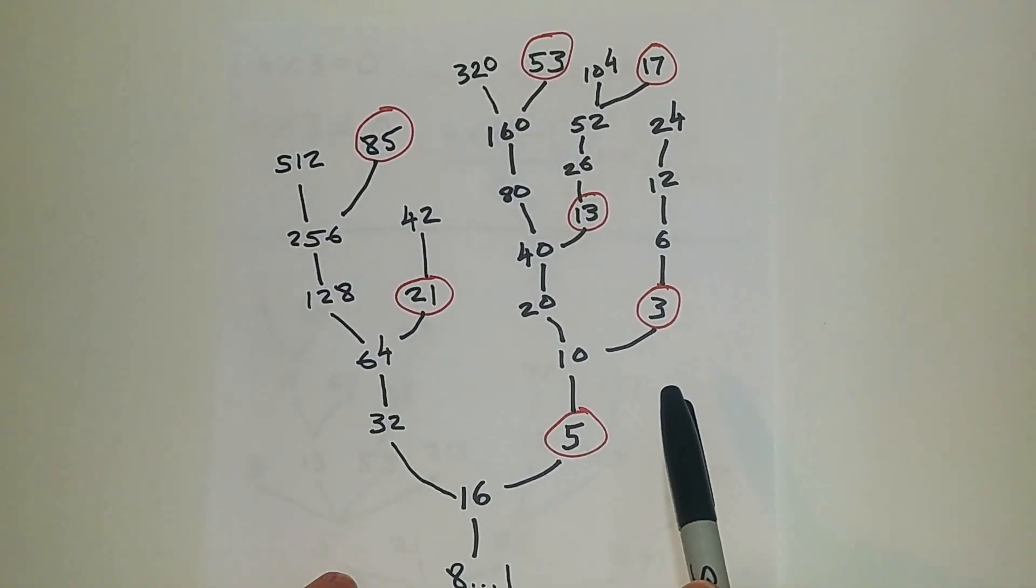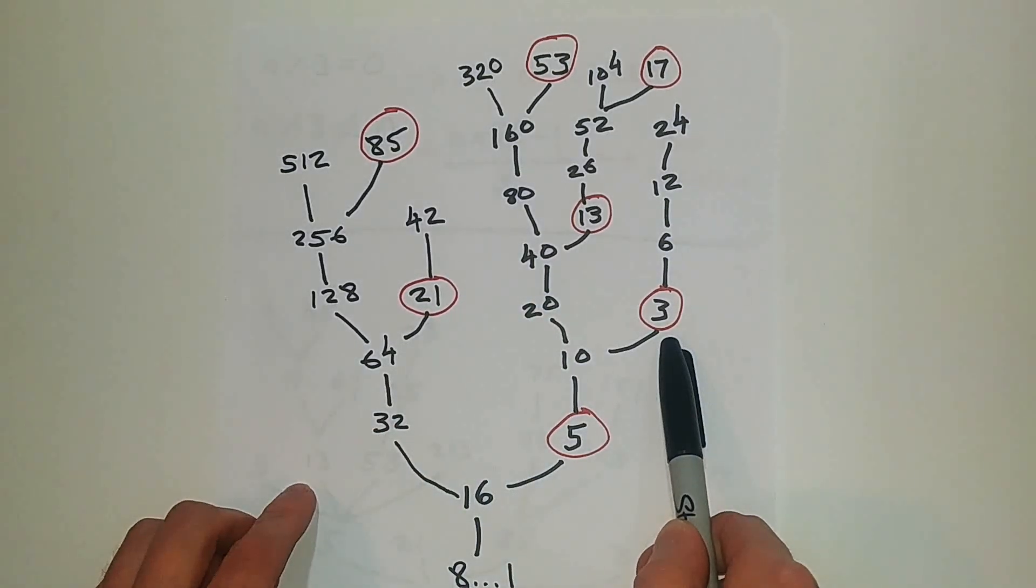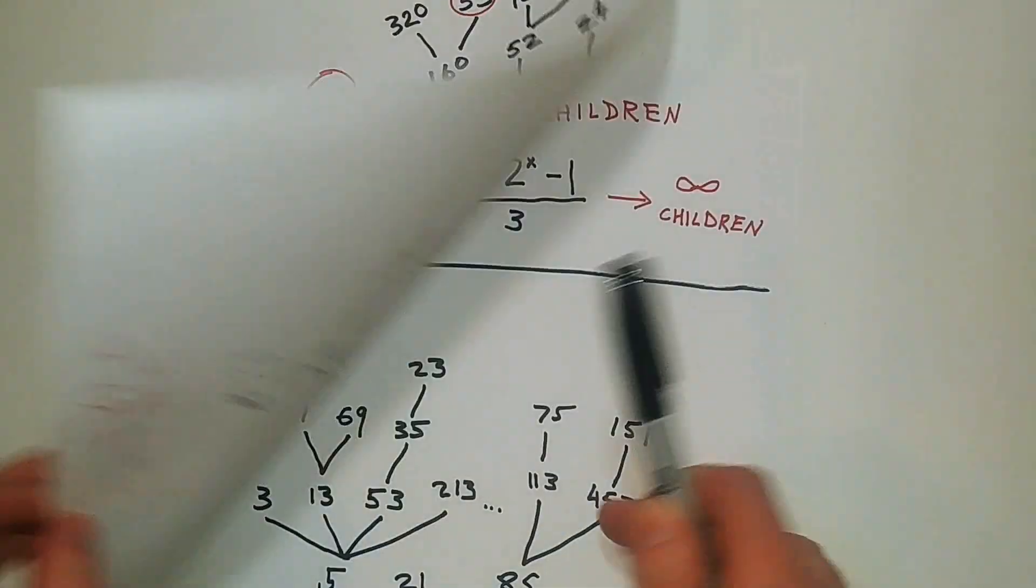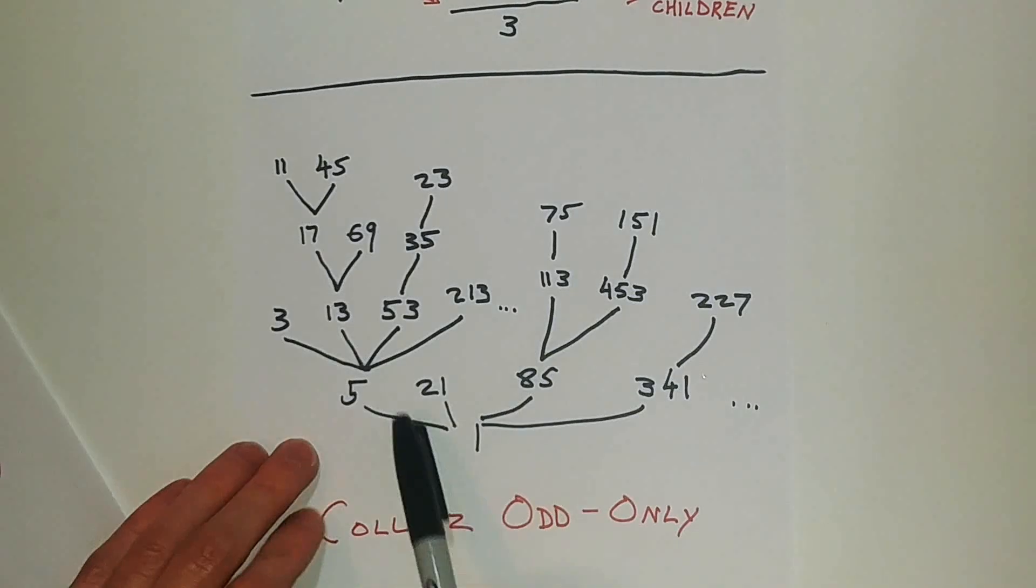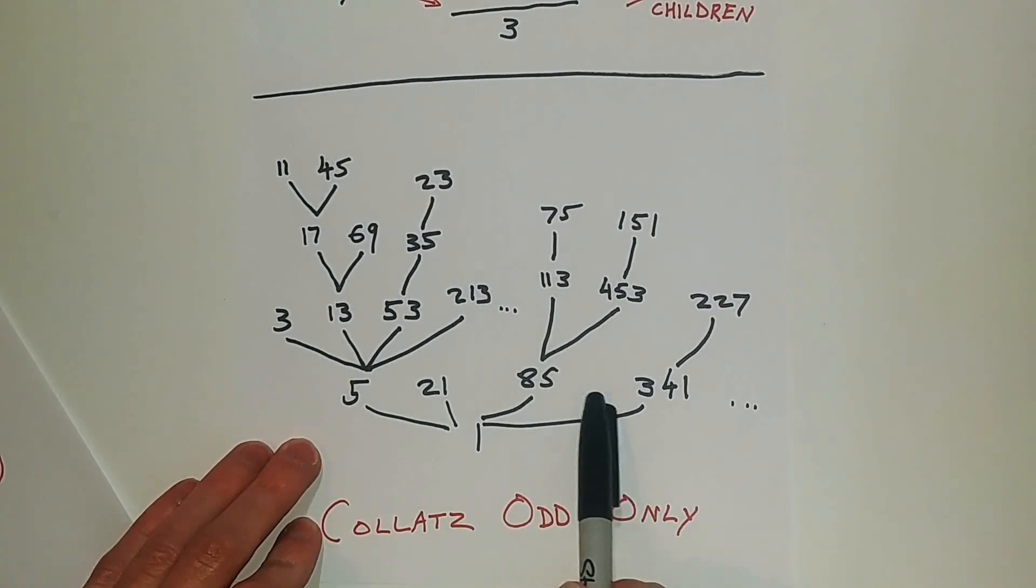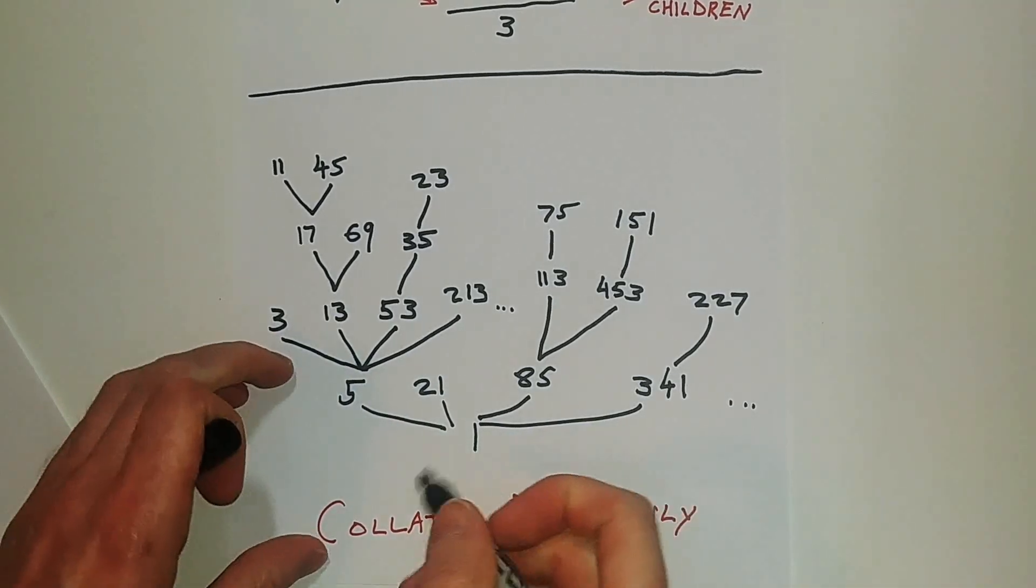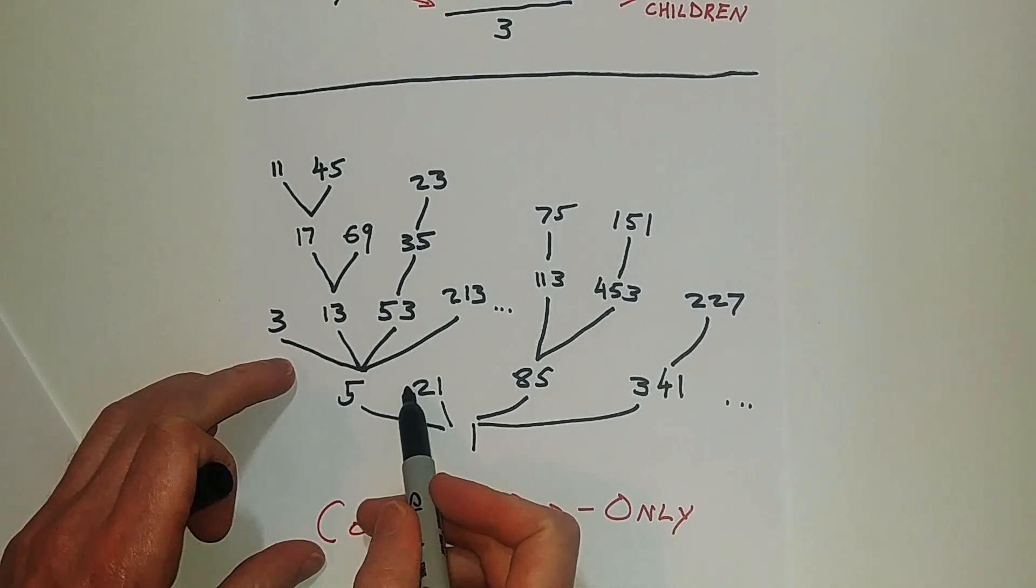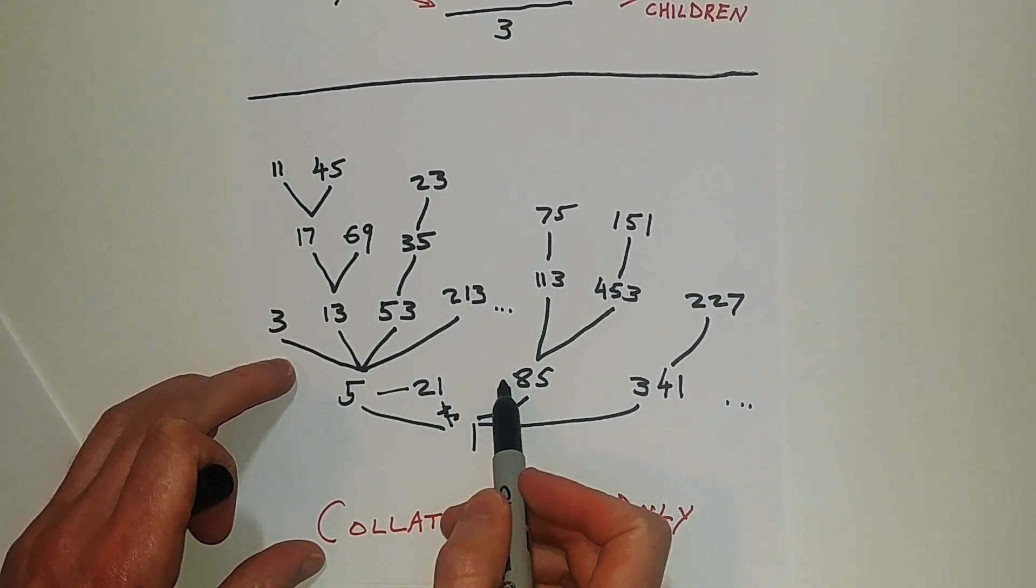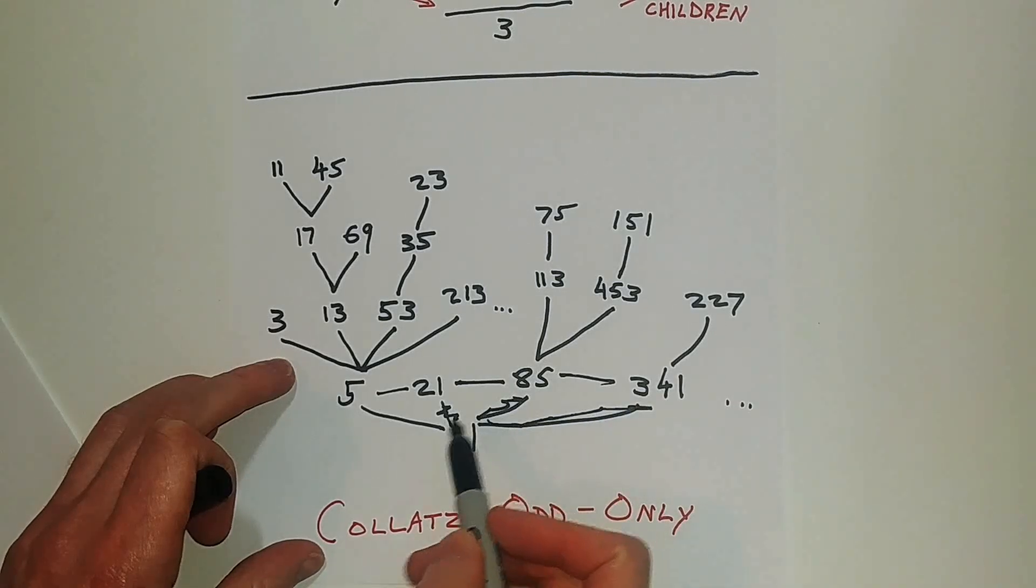So an example of that would be 13 to 3. Basically, we're going to connect instead of, if you look at this tree, instead of connecting 5, 21, 85, 341, instead of connecting all of them to 1, we'll only connect the 5 to 1, and we'll connect the 21 to 5 instead, and we'll connect the 85 to 21, the 341 to 85, and so on.